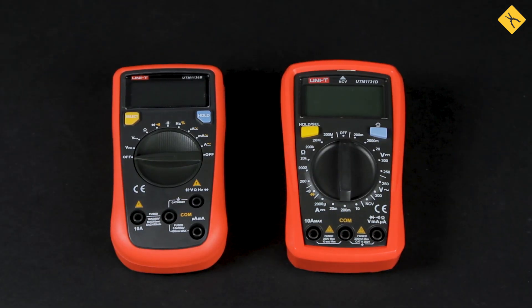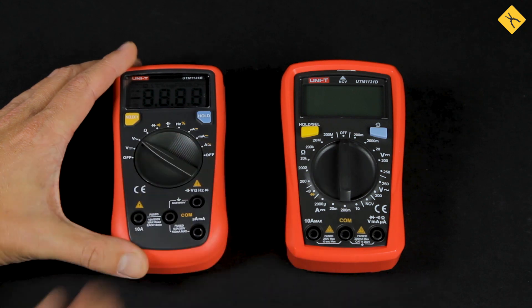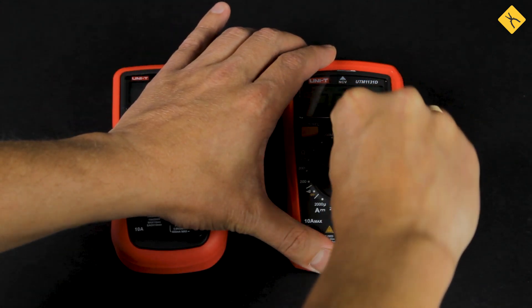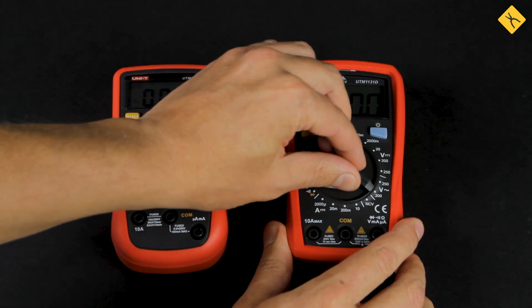Digital multimeters have either manual or automatic measurement range selection. For your domestic purposes, devices with automatic selection fit best. You only have to choose the measurement type, and the device will do the rest.